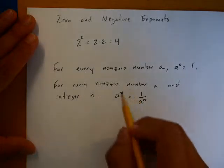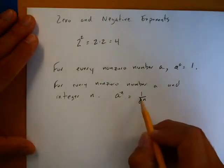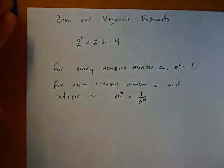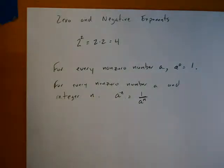So when you have a negative exponent, you move it across the fraction bar and you lose the negative. So let's take a look and see how that works in practice.